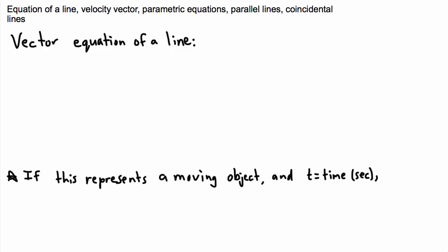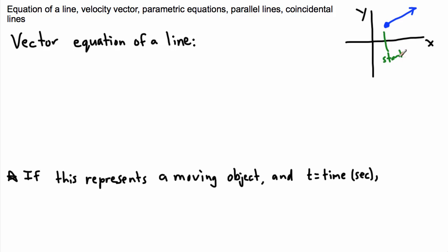We can write the vector equation of a line quite straightforwardly. We just need to know where we start and where we finish. I can do x, y coordinates. All I need to do is start somewhere, and then go in some direction. Right here is where you start, and this one here is just the direction that you go. Start here and just go in that direction.